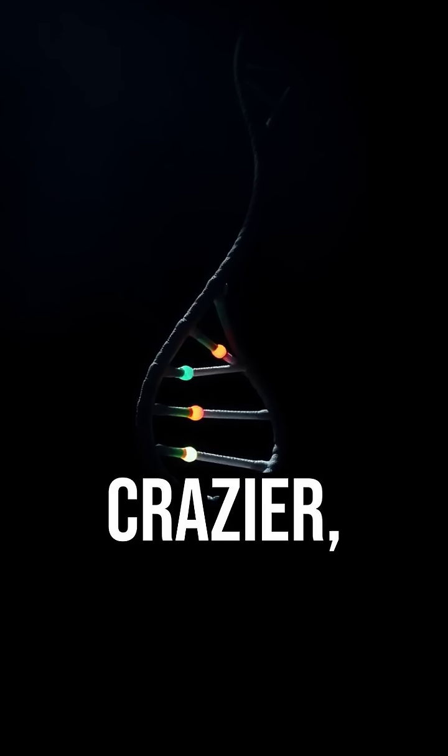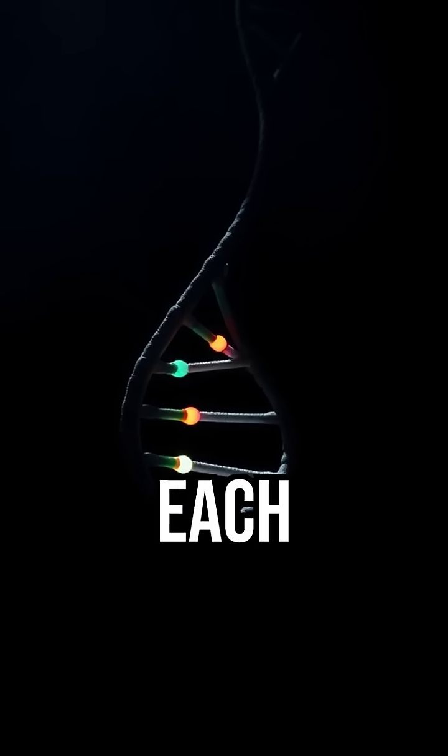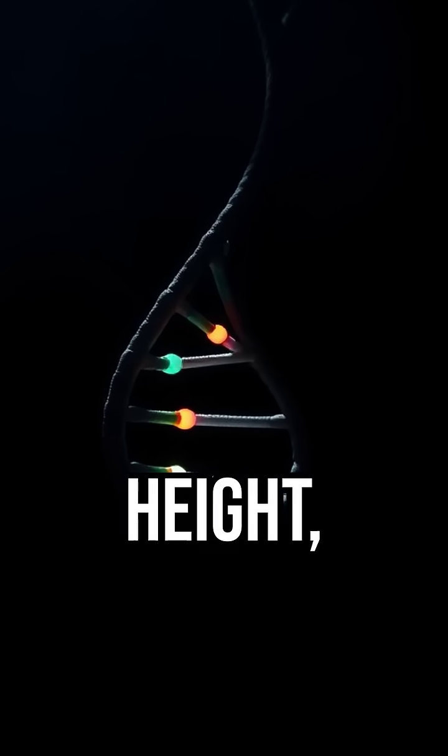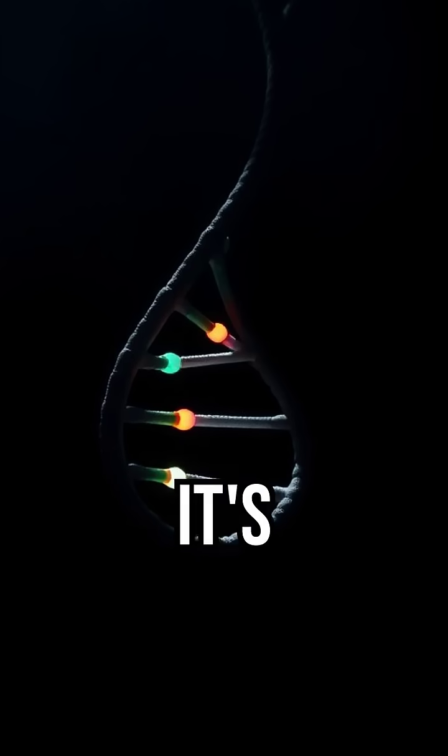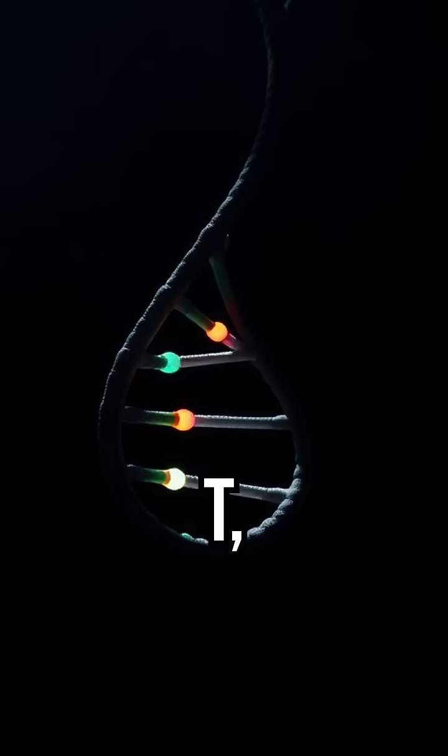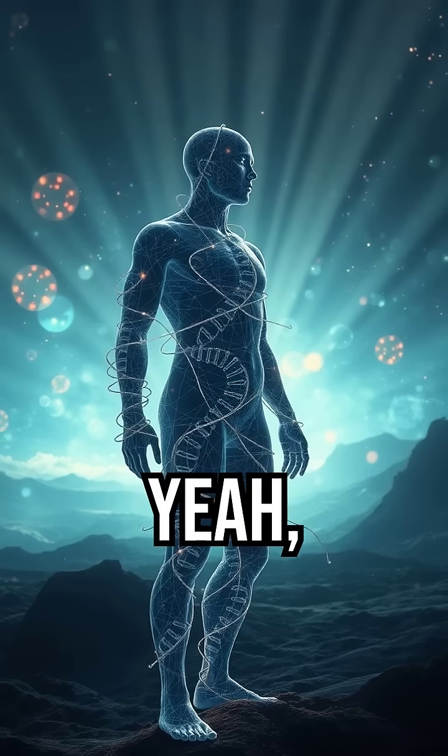Even crazier, that tiny strand in each cell holds the full blueprint to make you: eye color, height, even whether you hate cilantro. It's all coded in those microscopic rungs of A, T, C, and G.